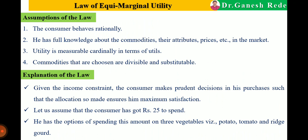The third assumption is that utility is measurable cardinally in terms of utils. In the law of equimarginal utility — also called the law of substitution, principle of proportionality, or Gossen's second law — utility is measurable in terms of utils, which is the unit of utility. The fourth assumption is that the commodities chosen are divisible and substitutable.